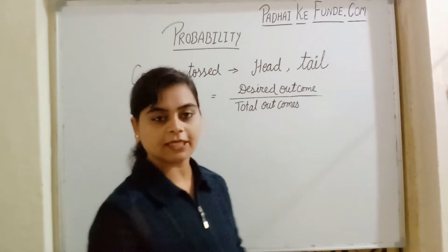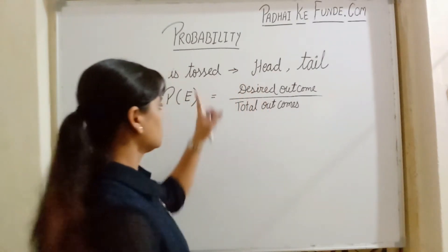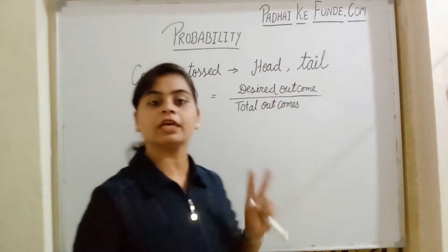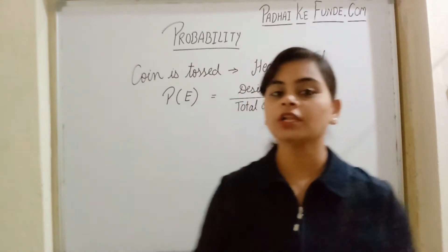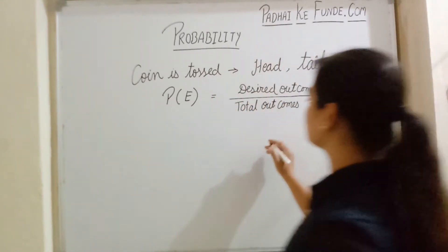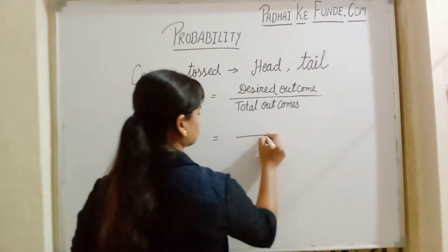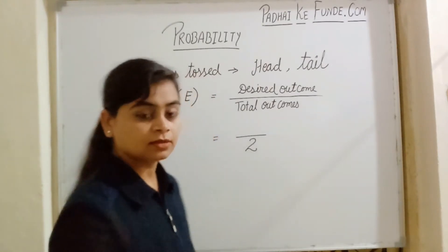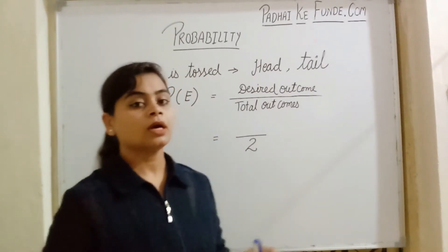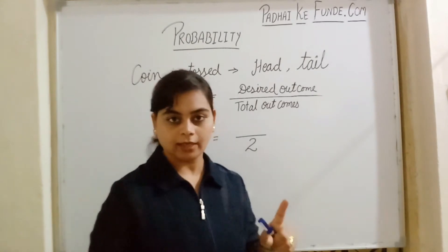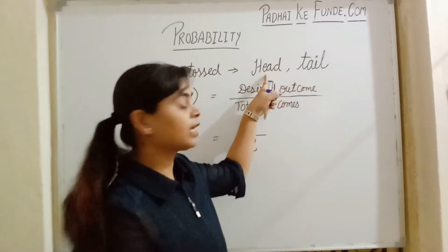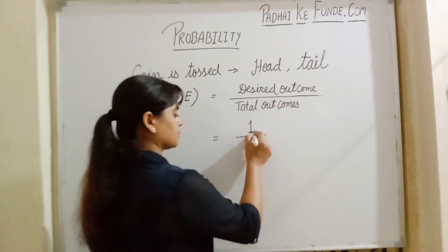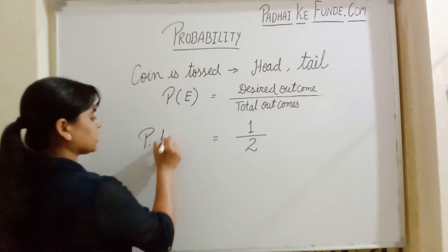It is this simple. Now let us put in the values. The total possible results in case of tossing a coin are two — either head or tail. If we talk about the probability to get a head, on a coin there is one head, so the desired outcome is one. Therefore, the probability to get a head is one out of two.